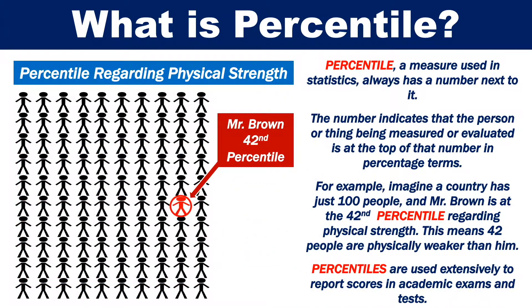Percentile, a measure used in statistics, always has a number next to it. The number indicates that the person or thing being measured or evaluated is at the top of that number in percentage terms.